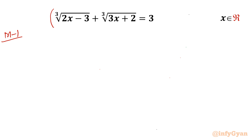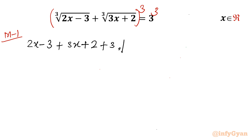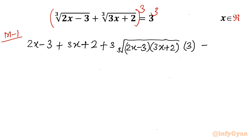Consider cubing both sides. I will use the (a+b)³ formula. So I will write directly: a³ is (2x-3), plus b³ — cube root and cube cancel — over (3x+2). Then a³ + b³, plus 3ab times the cube root of the product of a and b, radicands (2x-3) and (3x+2), in bracket (a+b), which equals 3. Right-hand side is 3 cubed = 27.